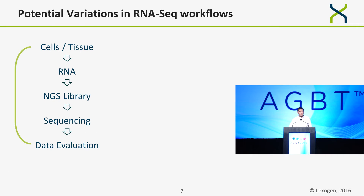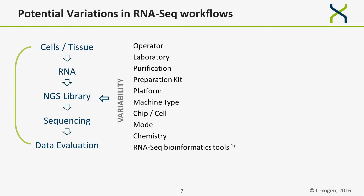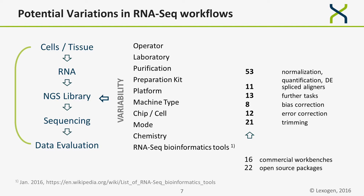If we look at such a workflow, the number of variabilities is horrendous. It starts with the operator — even with an automated system, there are certain drifts. Going down to the bioinformatics pipeline, this is not just a package. Most of you will be using different programs: you start with trimming, bias correction, error correction, and end with normalization, quantification, and differential expression calculations. All these give you more than 15 million different possibilities just to use them, and each program package has additional variables or knobs you can tune. Programs are not always well documented and are continuously improving — this is only the last part influencing the variability of your RNA-seq experiment.